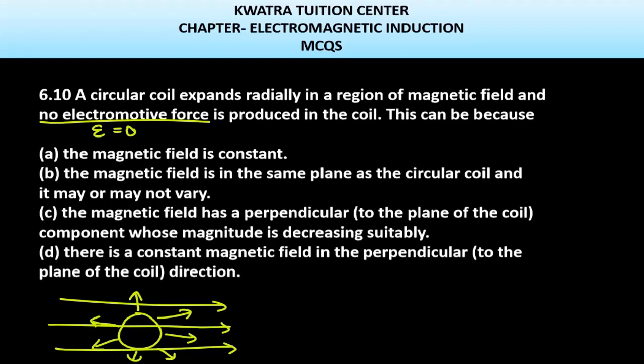It may vary - the magnetic field is in the same plane or it may vary or may not vary. Why is this? Because we know e is equal to dΦ over dt minus dΦ over dt.